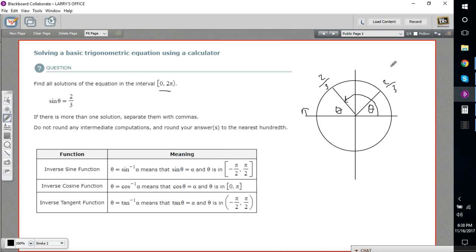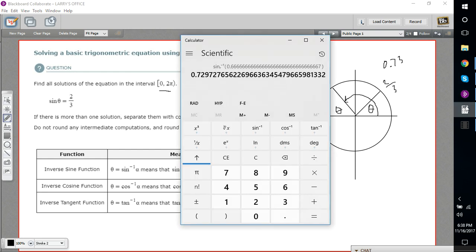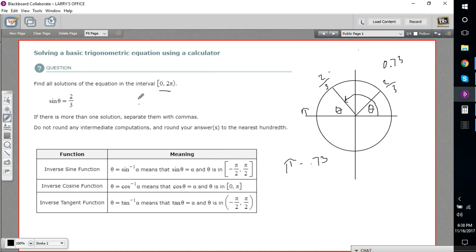So that's our first value, 0.73. And this value here is going to be π minus 0.73. We can do that on the calculator as well. We'll punch in π and subtract 0.73. That gives us 2.41. So we've got 0.73 and 2.41.